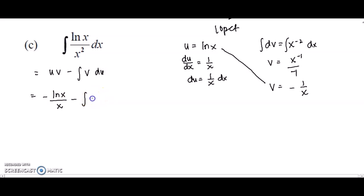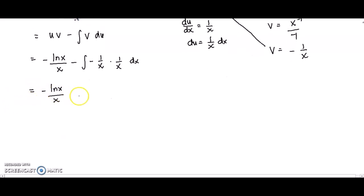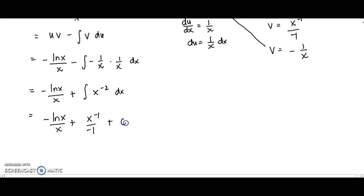For the integral of v·du, v = −1/x and du = (1/x) dx. Taking out the negative gives a positive, and we integrate 1/x² = x⁻². Integrating x⁻² gives x⁻¹/(−1) = −1/x. So the final answer is −log x/x − 1/x + c.